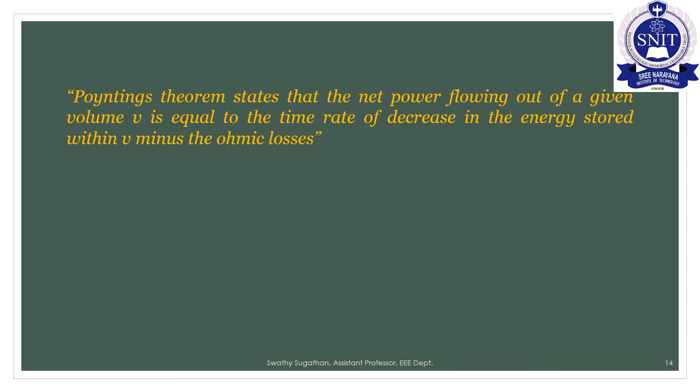We can state that the net power flowing out of a given volume V equals the time rate of decrease in energy stored within V minus the ohmic losses. The total energy includes both electric field energy and magnetic field energy minus ohmic losses.